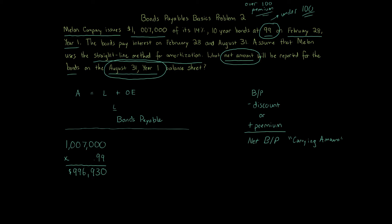This question says the company uses the straight-line method for amortization. There's also the effective interest method, which is much more challenging. The straight-line method is simpler because you use the same amount over the life of the bond. The effective method is more economically accurate — like mortgage or car loan payments, where early payments carry more interest than later ones, and it gradually flips over time.